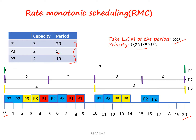If you take the first process, P1 has to execute three times over a period of 20, so I am giving three slots for P1. Then for P2, for every five interval, we have to execute two times: from 0 to 5, two times; then 5 to 10, two times; 10 to 15, two times; and 15 to 20, two times.